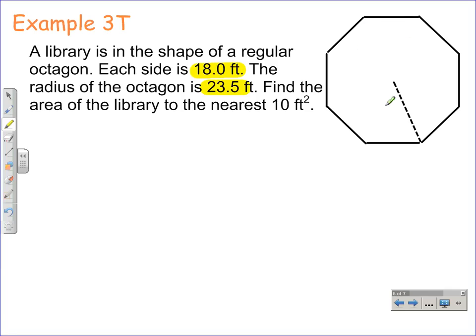If you don't have an octagon drawn, you're going to want to do your best to draw an octagon and draw in a radius. And we can now go ahead and label this stuff. The side is 18 feet, so any side you can label as 18 feet, and the radius is 23.5.